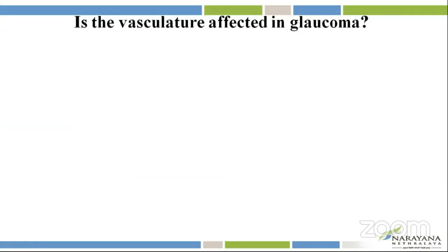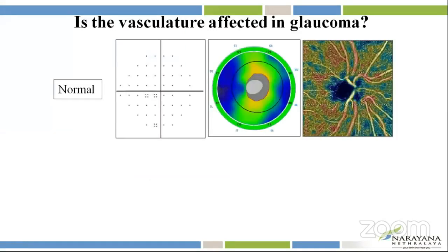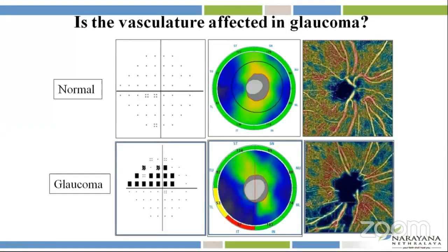Coming to the first question: is the vasculature affected in glaucoma? Yes, it is. This is a picture of a normal visual field with a normal RNFL and the heat map on the OCTA showing the normal capillary density. This is a glaucoma patient who has a superior field defect with an inferior RNFL defect, and it shows a reduction in the vessel density in the inferior peripapillary area corresponding to the superior field defect on visual field and inferior RNFL on the OCT.